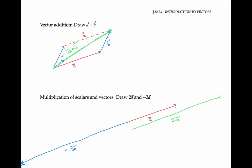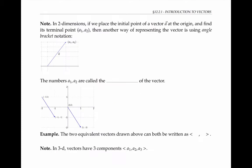In the next part of the video, we'll be using coordinate grids for vectors. In two dimensions, if we place the initial point of a vector a at the origin and find the coordinates of its terminal point — called a₁ and a₂ — then one way of representing the vector is with angle bracket notation. We write the coordinates of that terminal point, a₁ and a₂, in these pointy brackets, and that completely defines the vector, as long as the initial point is starting at the origin. The numbers a₁ and a₂ are called the components of the vector.